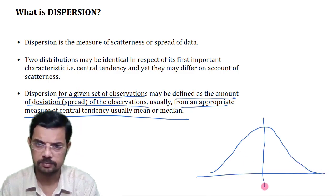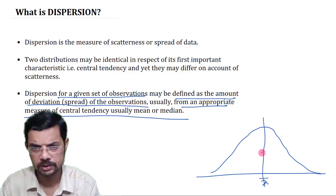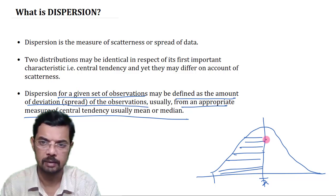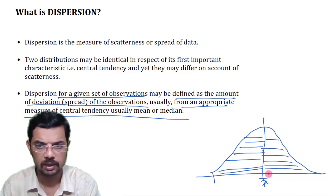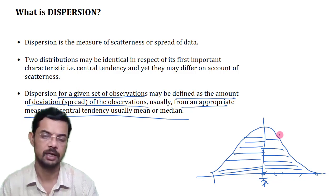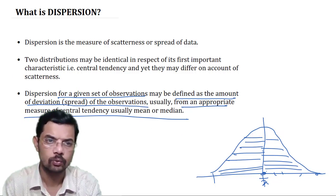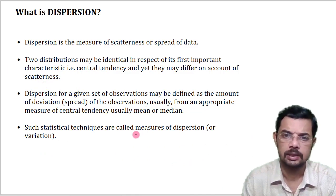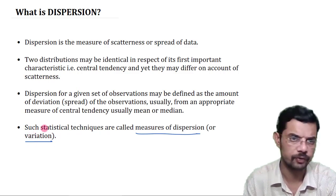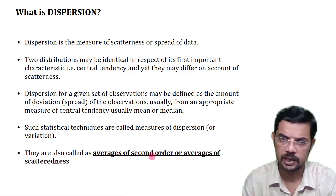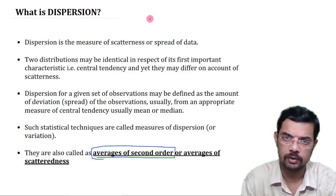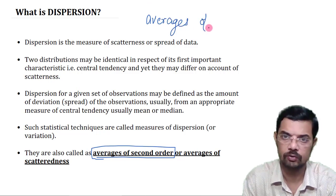Consider a curve with mean x-bar. The dispersion is the amount of deviation of the observations from the mean. Some observations are here, some there, and the corresponding deviations can be obtained. Measures of dispersion are also sometimes called measures of variation, and they are also known as averages of second order.